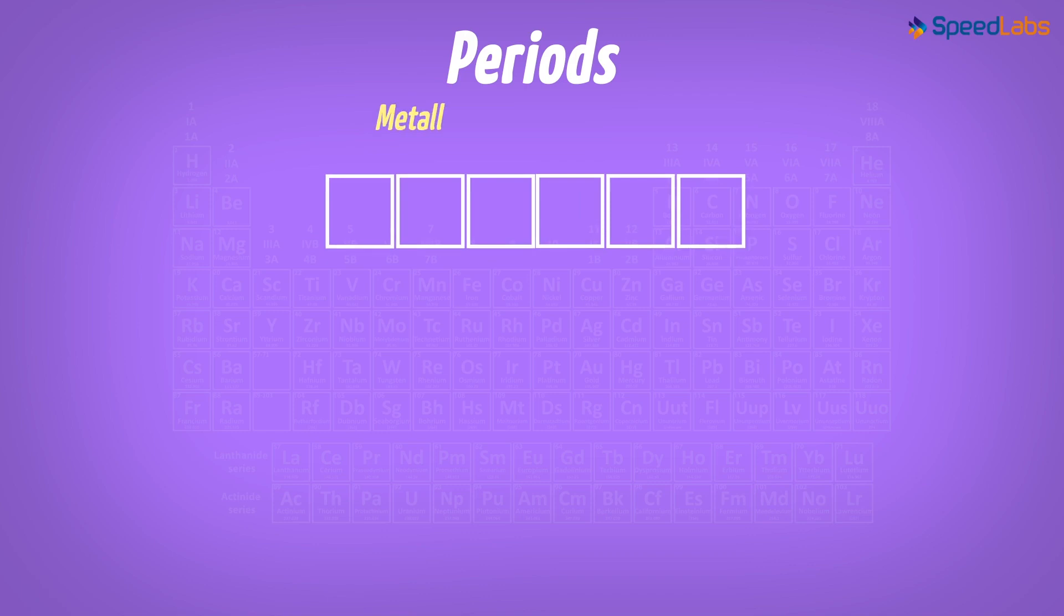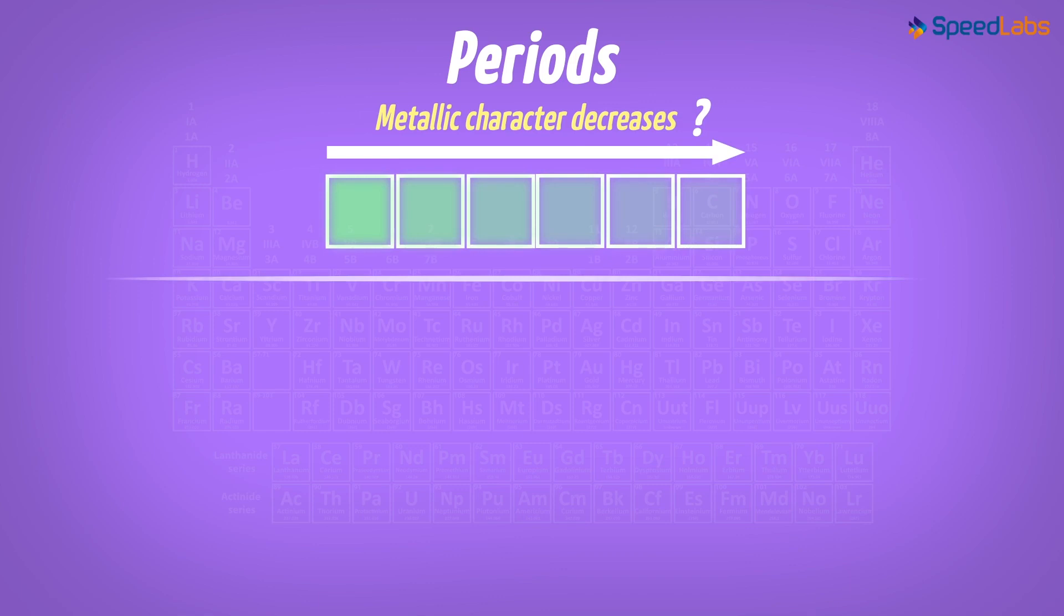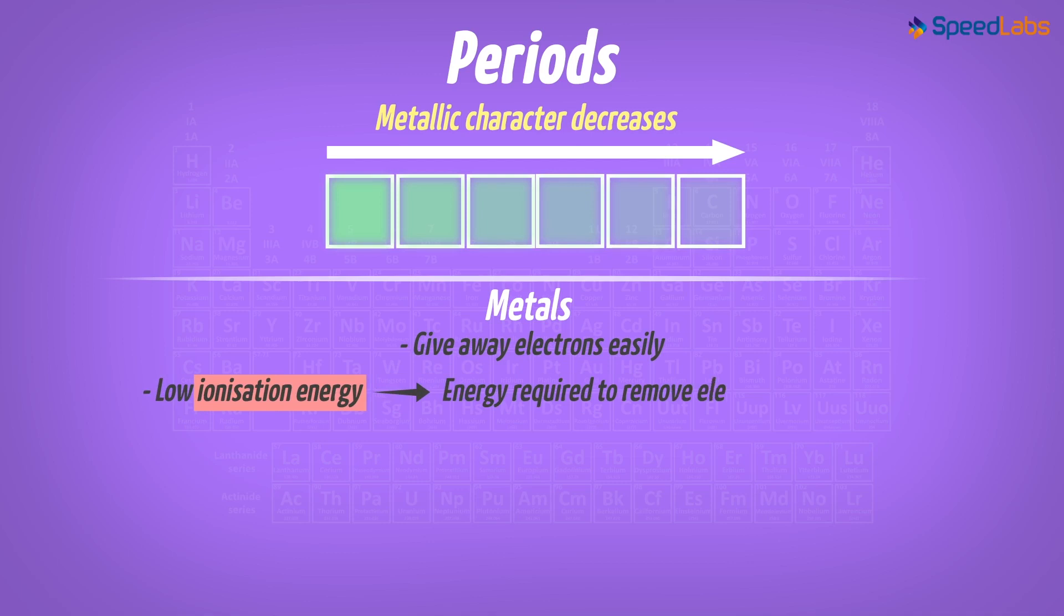We know that metallic character of elements decreases from left to right in the period. Have you ever wondered what could be the reason for this? Let me explain. We are aware that metals have a tendency to give away electrons. This is because they have low ionization energy.